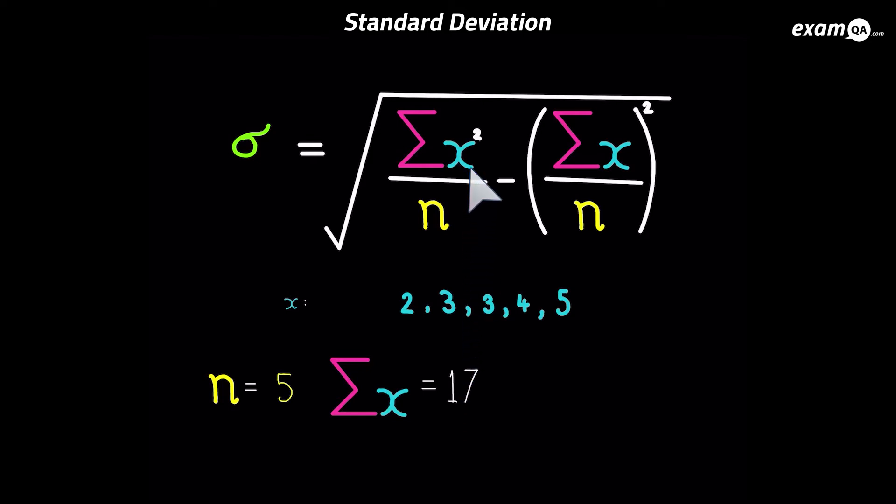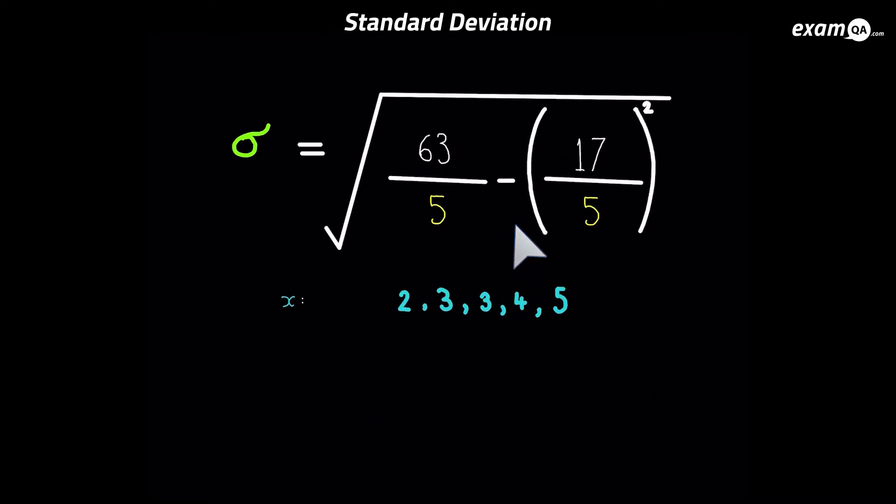Now in that formula we've also got sum of x squared. Now sum of x squared just means add the values up. But not the values as they are, the squared versions. So 2 squared plus 3 squared plus 3 squared plus 4 squared plus 5 squared. And when we add those up you get sigma x squared. And that gives us 63. Now we've got all the things we need for our formula. So we're just going to fill it in. And putting that into your calculator, you get standard deviation equals 1.02. Remember this is something your calculator can do for you. But I'm showing you how to do it manually first.